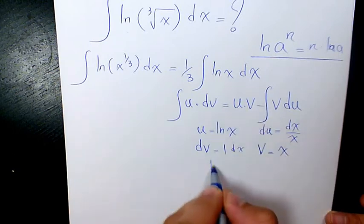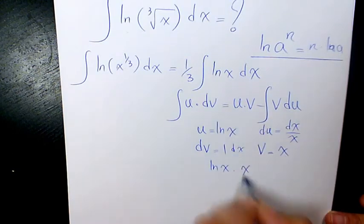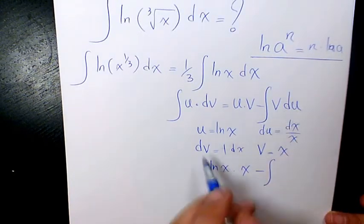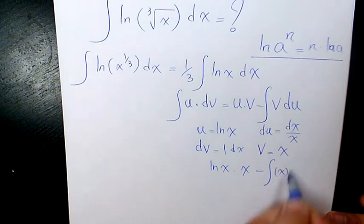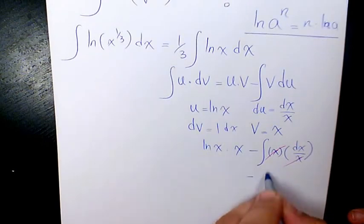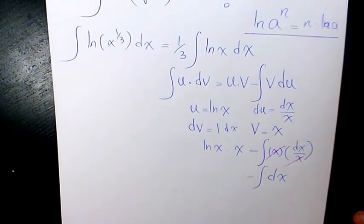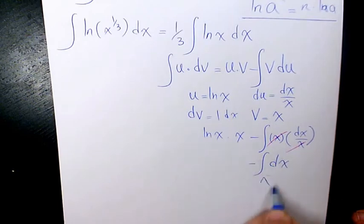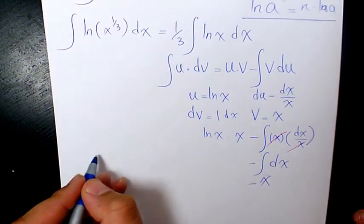Now if you substitute here, it's going to be ln x times x, or x ln x, minus the integral of v du. v du is x times dx over x, which will cancel out. It's going to be negative integral of dx, which will be just negative x.